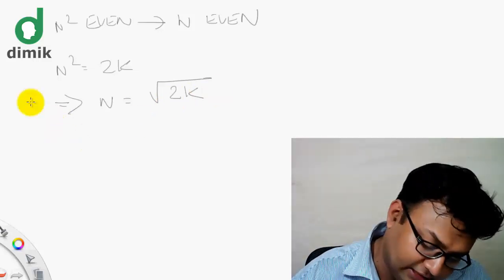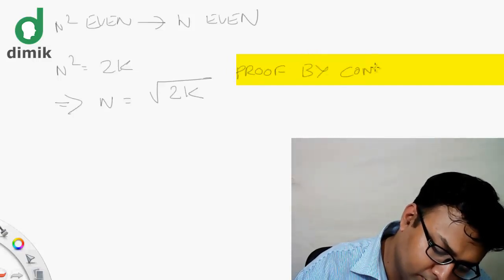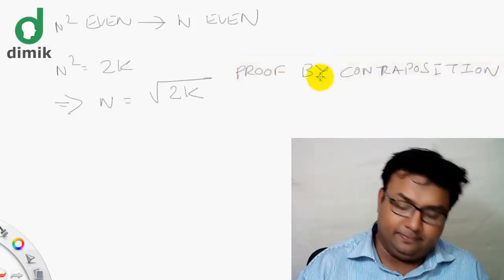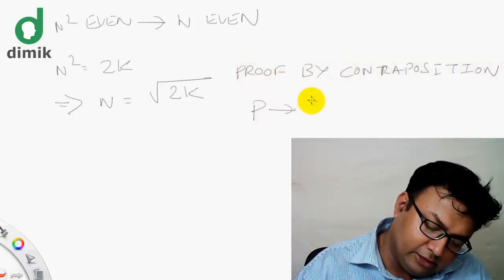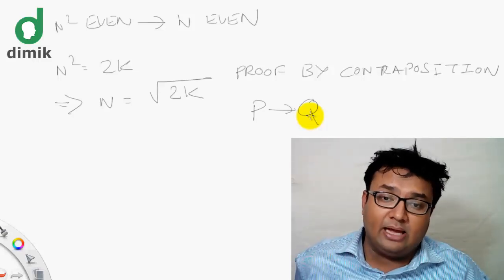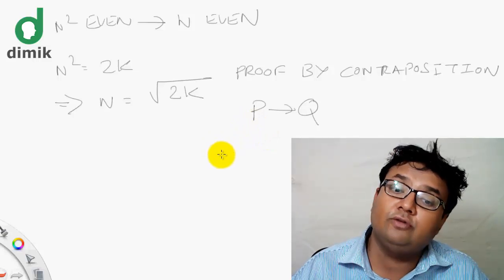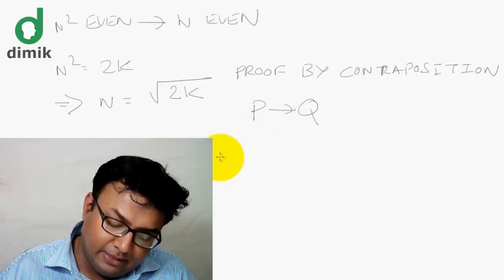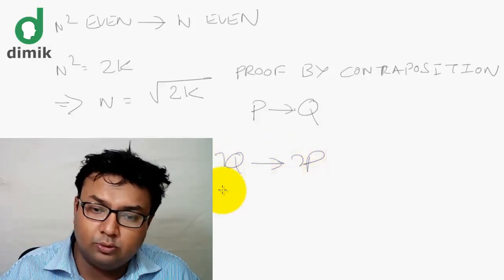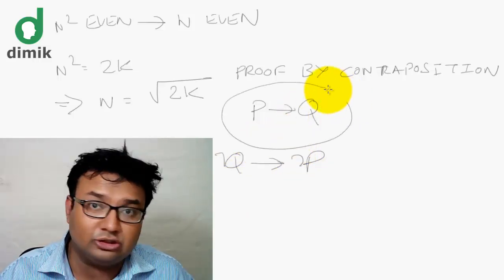Proof by Contraposition. We know P implies Q as a condition. We know the logical equivalence — we know the two components and the truth value. The particular condition of P implies Q at a logical equivalence version: P implies Q is equivalent to its contrapositive, which is not Q implies not P. If P implies Q is true, then the contrapositive is also true.